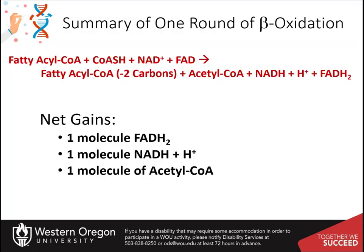During one round of beta-oxidation, energy potential is gained with the formation of one molecule of FADH2, one molecule of NADH, and one acetyl-CoA. The FADH2 and NADH can be used directly in the electron transport chain to generate ATP.